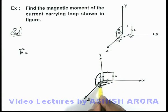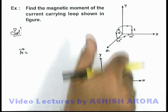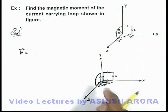For this triangular loop, the current is in anticlockwise manner and here the magnetic moment will be in the direction of the y-axis.